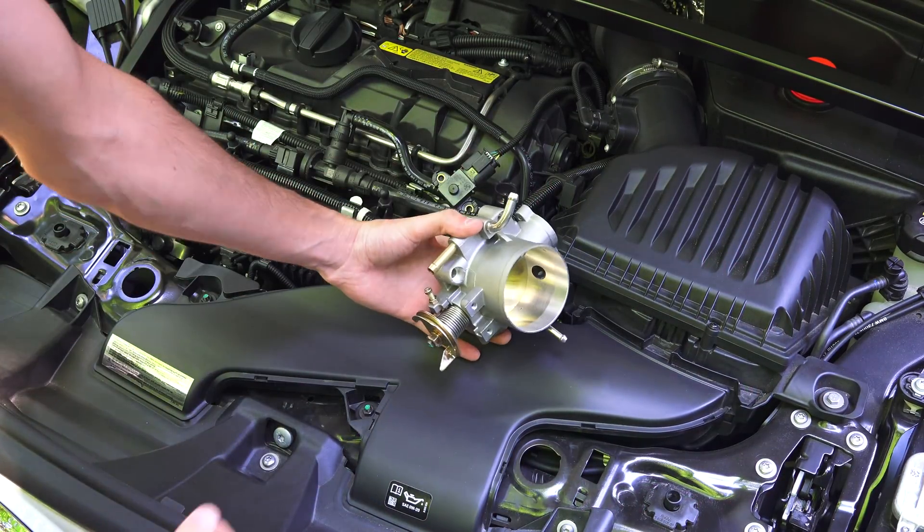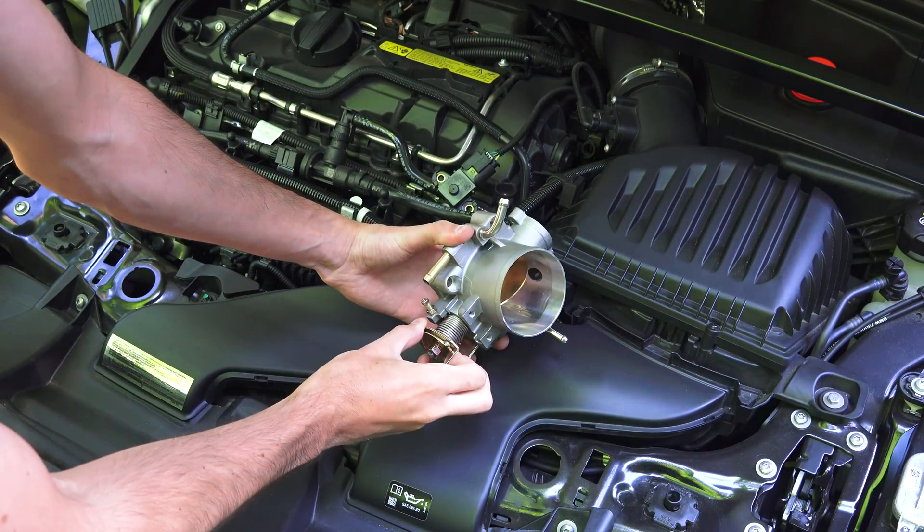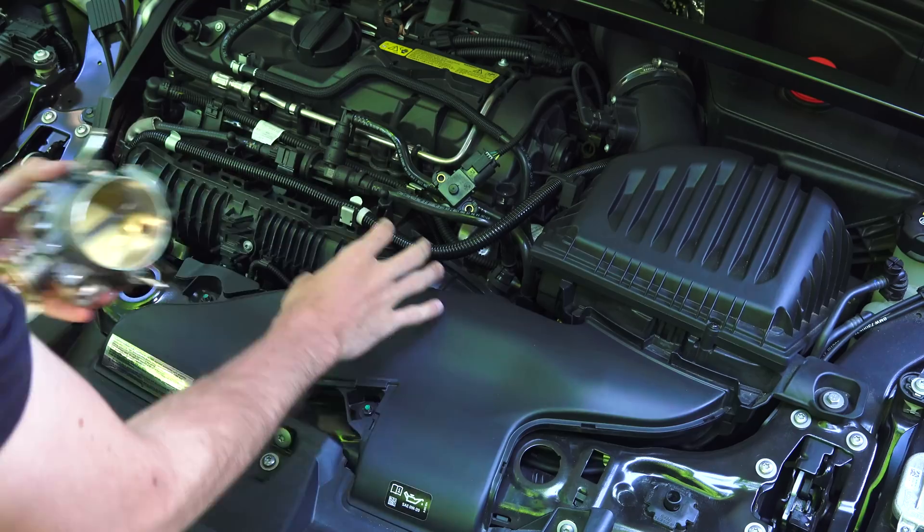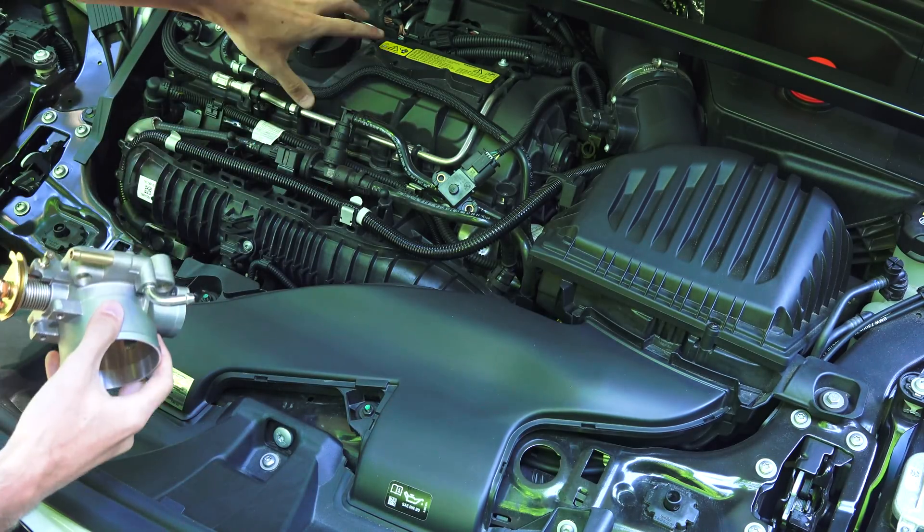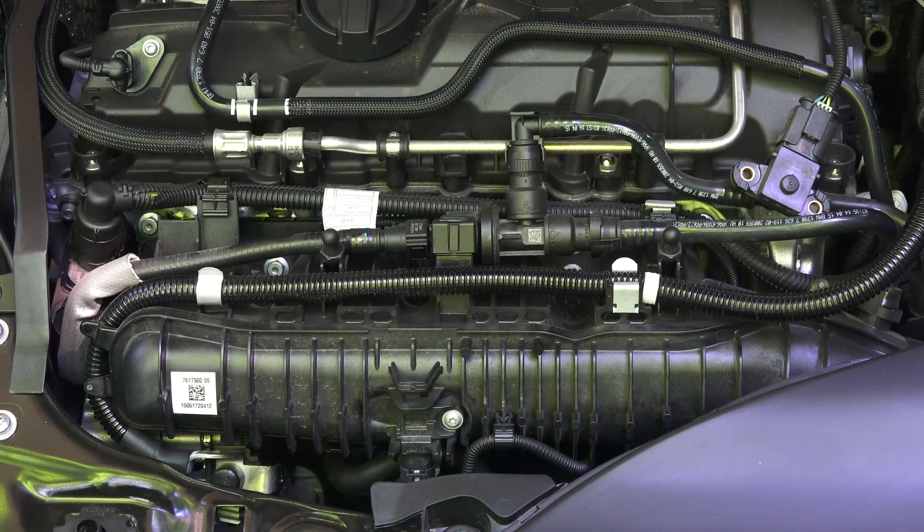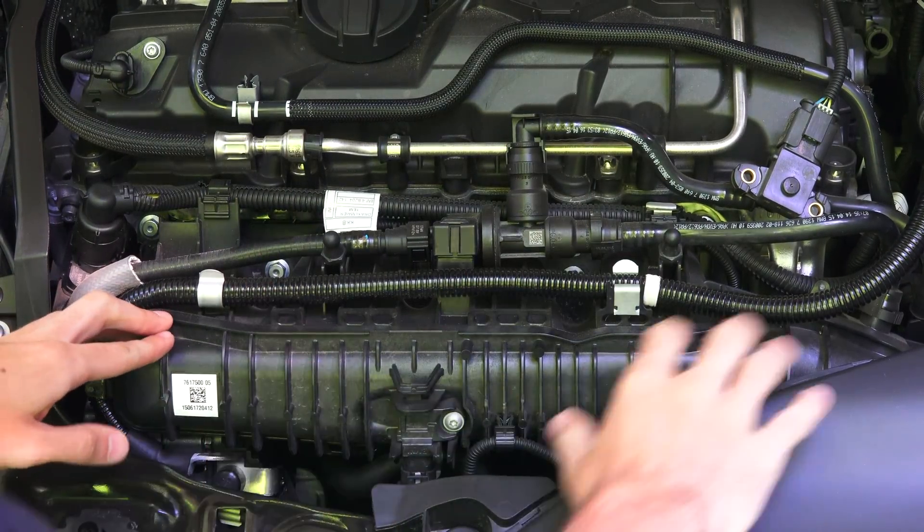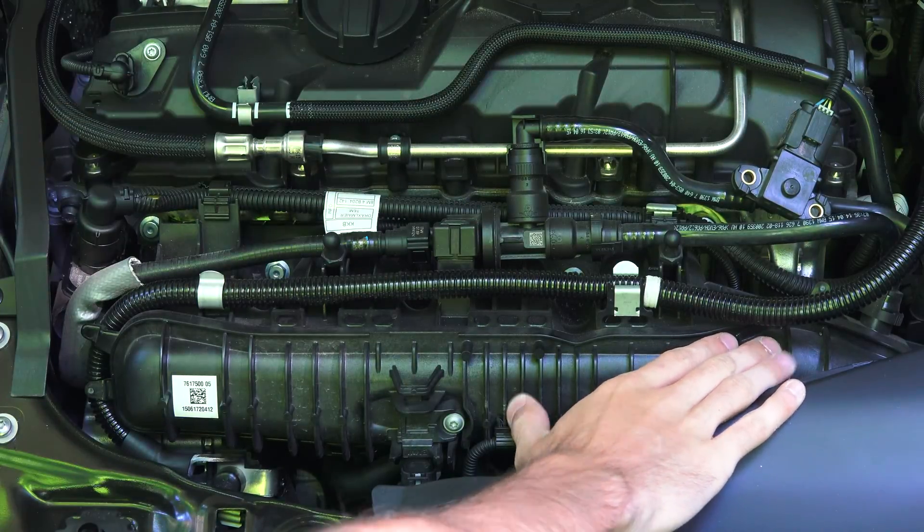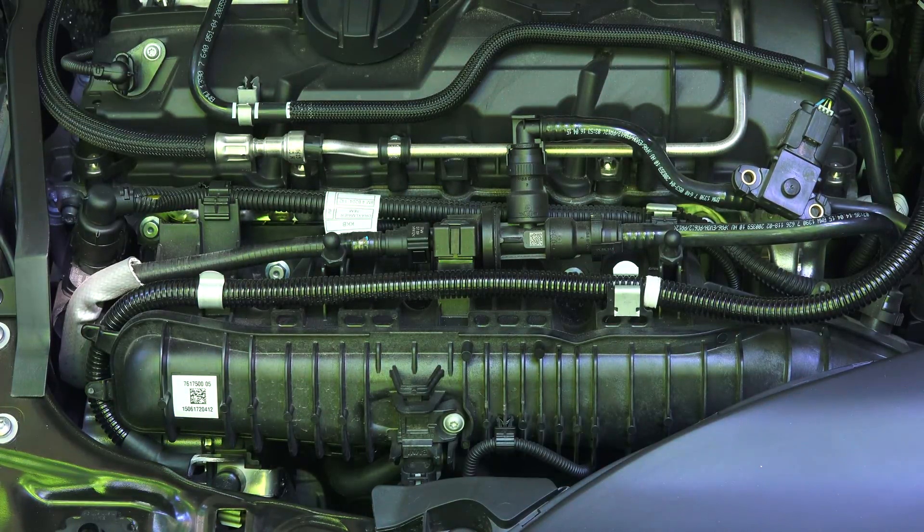There are additional benefits to this system. With throttle bodies, once you floor it, you have to wait for the air to travel from the throttle body to the intake valve. By using valves to regulate airflow and already having nearly atmospheric pressure right outside the cylinder, the intake is immediate and thus response is improved.